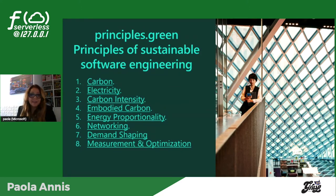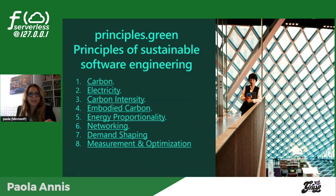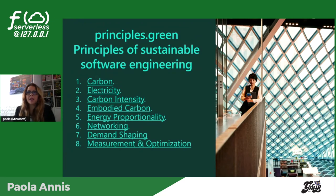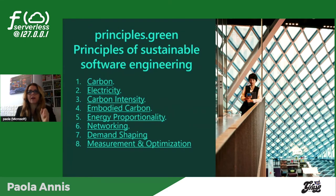Sesto principio: ridurre la quantità di dati e la distanza che questi devono viaggiare attraverso la rete. Il networking ha il suo impatto sull'ambiente. Ottimizzare la strada che i pacchetti devono fare a volte ha un peso importante quasi quanto ridurre l'utilizzo dei server. Le emissioni del networking dipendono da molte variabili: la distanza attraversata, il numero di hop tra device di rete, l'efficienza dei device e anche la carbon intensity della regione in cui i dati sono trasmessi in quel momento.